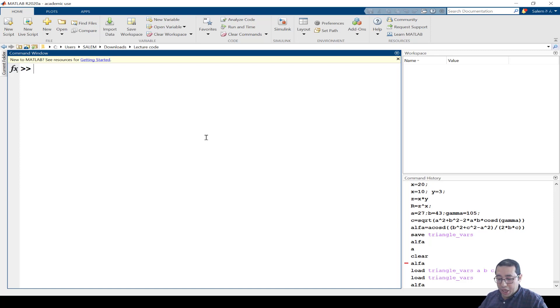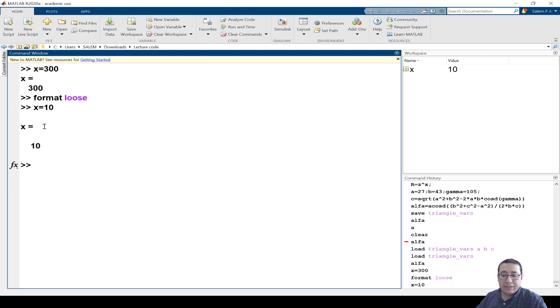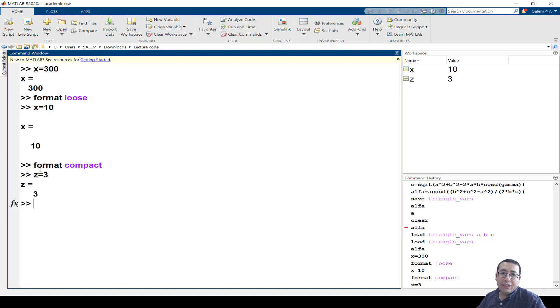In MATLAB, if we write x equals 300, you can see there is no blank line. This is format compact. And if we need to change to format loose, just write format and then loose. And then write again x equals, for example, 10. And you can see this is a big space or it adds a blank line between each line in the command window. And again, if we need to go back to format compact, enter, and then we define, for example, z equals 3. So now we eliminated all the blank lines. I think it's very clear and very easy.